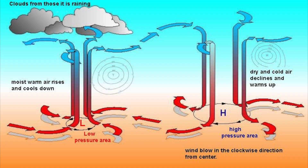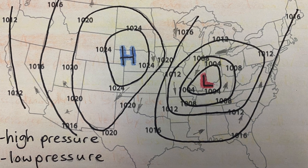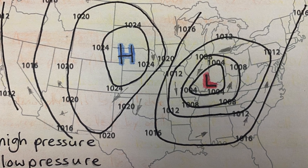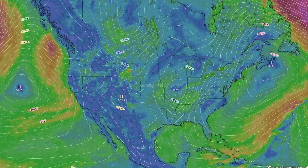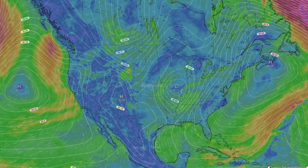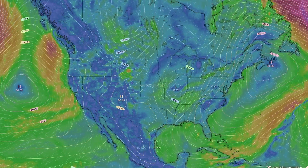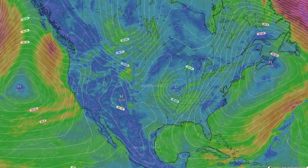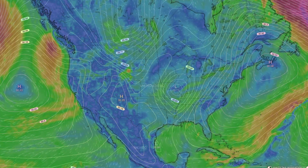Movement of air creates wind. Isobars are lines on pressure maps that indicate areas of different air pressure by connecting pressure readings across the area being analyzed. The pattern of isobars indicates areas of high pressure and low pressure.